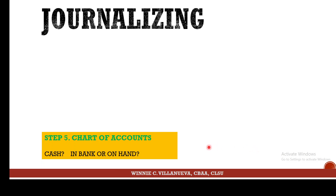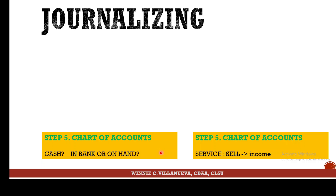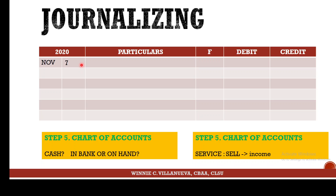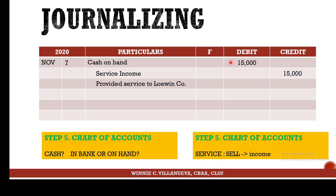The name of the cash received could be Cash in Bank or Cash on Hand. For this sample, assume Cash on Hand. Since you're selling services, the title will be service income. Start with the date — November 7. The value received is debited: Cash on Hand. The value parted with is credited: Service Income. The explanation mentions to whom the service was provided — Mr. Lawin or Lawin Company. Amount: 15,000.